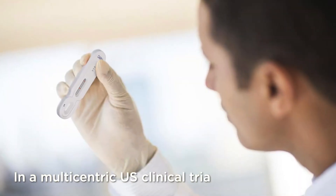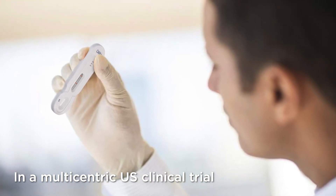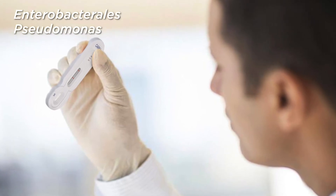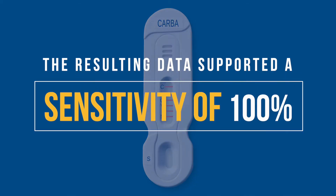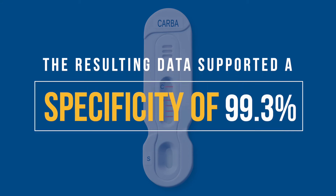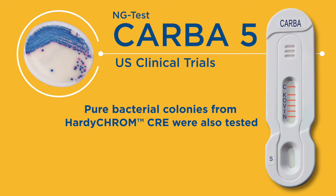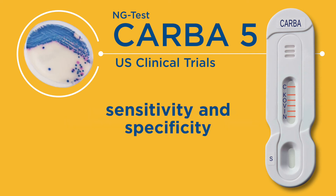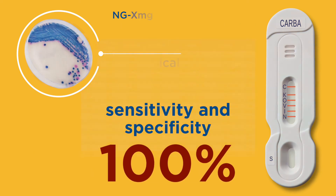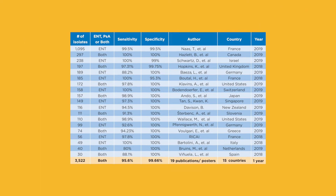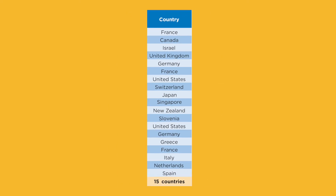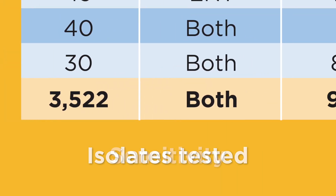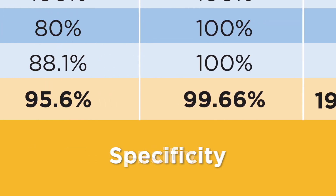In a multicentric US clinical trial, NG-Test CARBA-5 performance was evaluated from bacterial colonies of Enterobacteriales and Pseudomonas aeruginosa grown on 5% sheep blood agar and MacConkey agar. The resulting data supported a sensitivity of 100% and a specificity of 99.3% after discrepant analysis. Pure bacterial colonies from chromogenic CRE agar were also tested, supporting a sensitivity and specificity of 100% after discrepant analysis. Additionally, published results from 15 different countries with over 3,500 isolates tested support a sensitivity of 95.6% and a specificity of 99.6%.